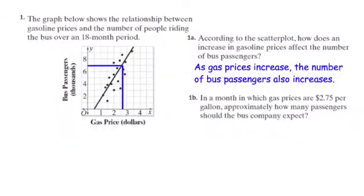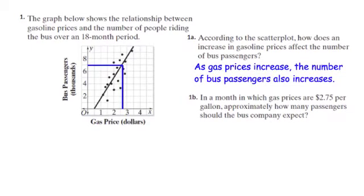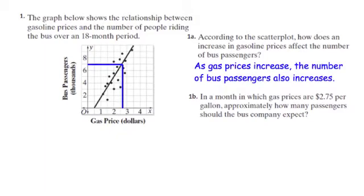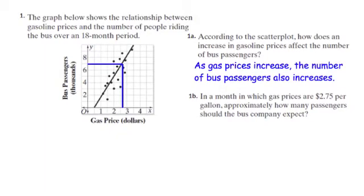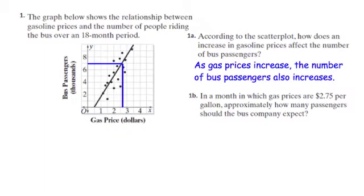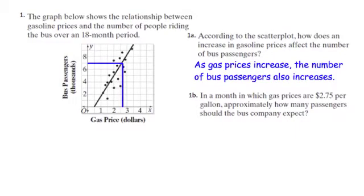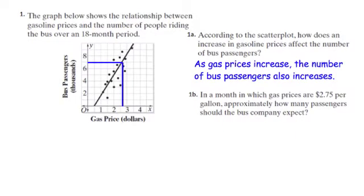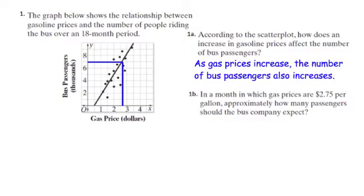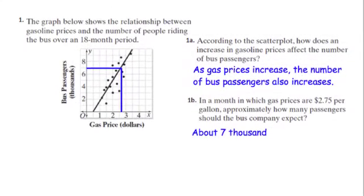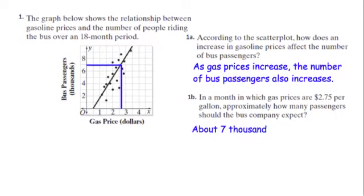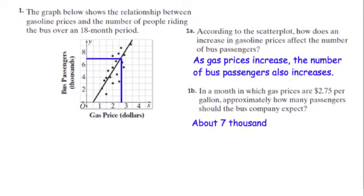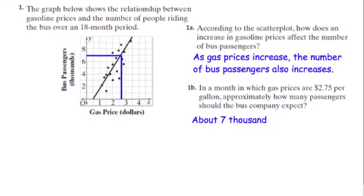The second question asks, in a month in which gas prices are $2.75 per gallon, approximately how many passengers should the bus company expect? Well, if we take a look at our trend line and look at where $2.75 lies, we would cross the trend line at about $7. And so we can assume that there would be approximately 7,000 bus passengers in a month where the gas price was $2.75.